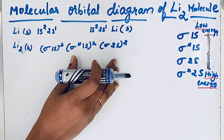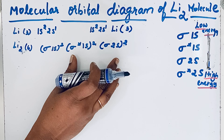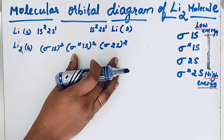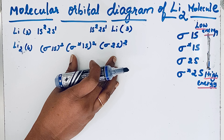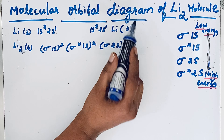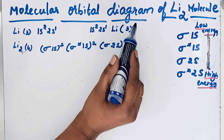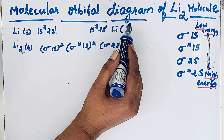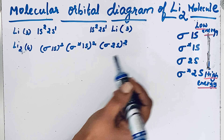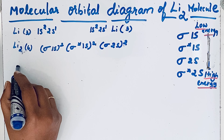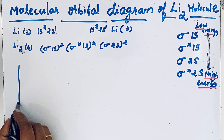This is the molecular orbital configuration of lithium molecule. Using this we can draw the molecular orbital diagram, which is a graphical representation in which molecular orbitals are arranged on the basis of their increasing energy. Let us draw that energy level diagram.